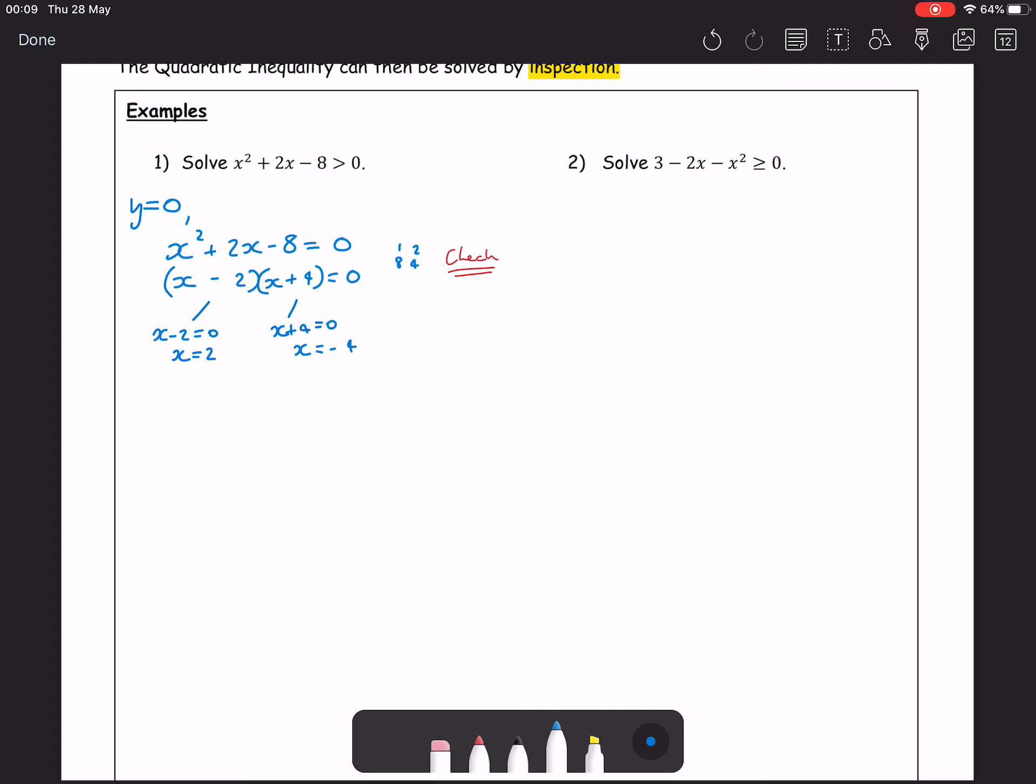What this allows is us to draw a very basic sketch of exactly what's happening within our graph. x and y, roots occur at 2 and minus 4, and we have a positive x² so we have a u-shaped graph, something that will look like that. There's our minus 4 and there's our 2.